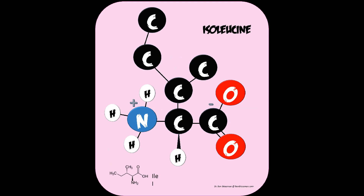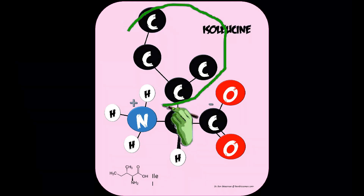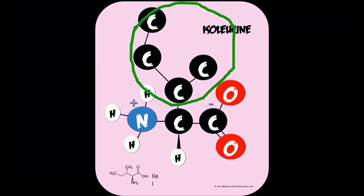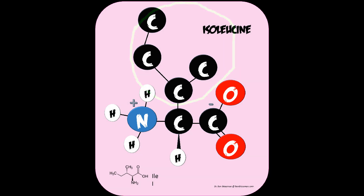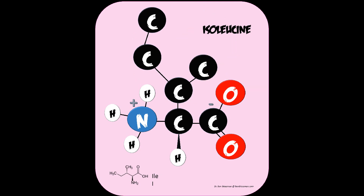Next up is isoleucine — as you might guess, it's an isomer of leucine. The R-chain has a CH, then a CH3, then CH2, and another terminal CH3. So on the beta-carbon we have one methyl group and on the other side an ethyl group attached to it.